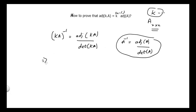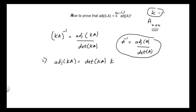Now I can bring the determinant of kA to the other side, so I will write: adjoint of kA is equal to determinant of kA times (kA) inverse.